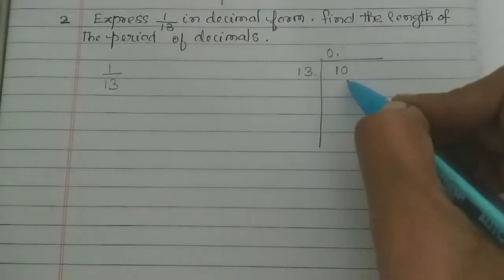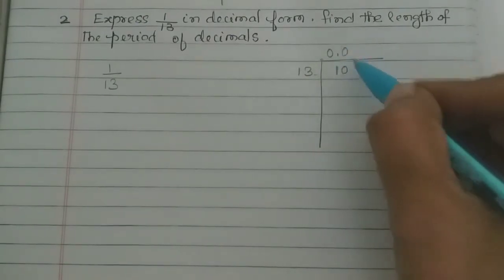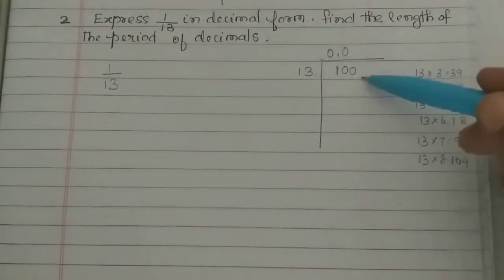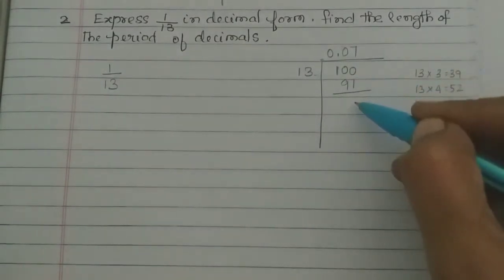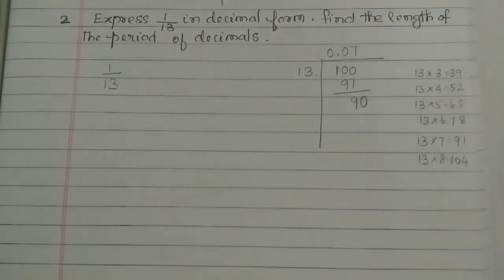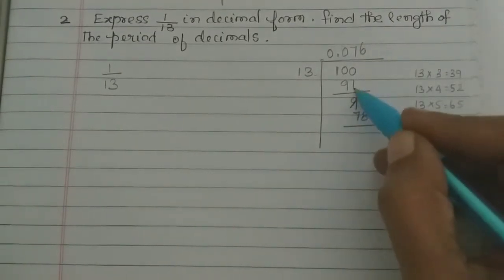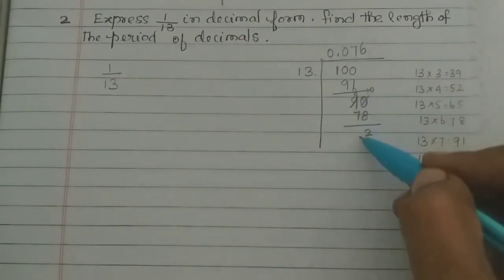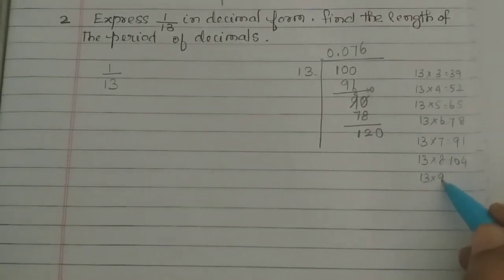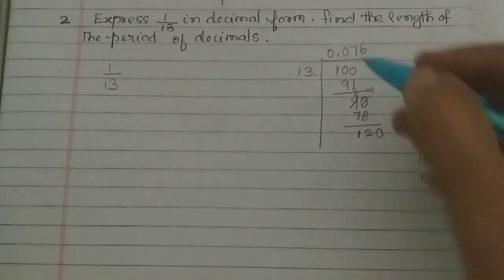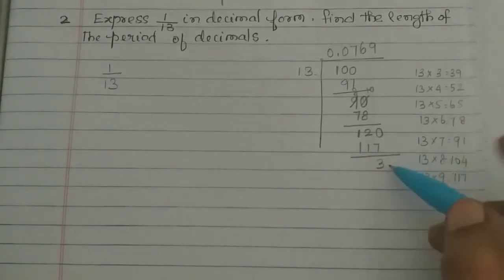10 is smaller than 13, so we write 0. Continuing the division: 13 into 8 is 104, 13 into 9 is 117 — so 9 times 117, which gives a remainder of 3, since 120 minus 117 is 3.